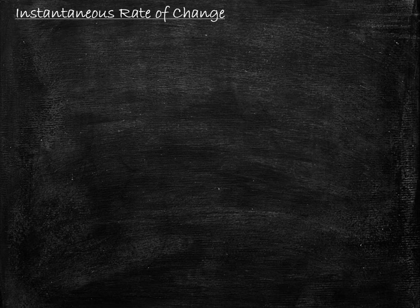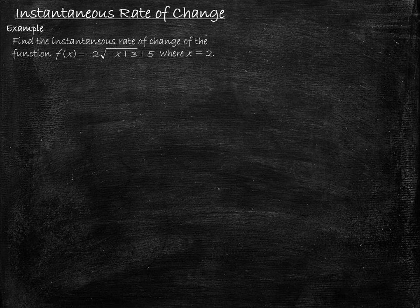Let's take a look at instantaneous rate of change. Before considering an example, it's worth noting that there are many ways to solve problems involving instantaneous rate of change — methods that use large tables of values, and methods that use slick shortcuts seen in calculus classes. But this is just one possible way of going about solving an instantaneous rate of change problem. We are asked to find the instantaneous rate of change of the function f(x) = −2√(−x + 3) + 5, where x equals 2.